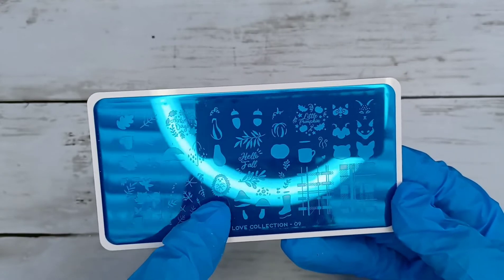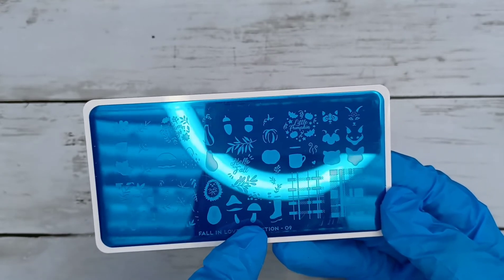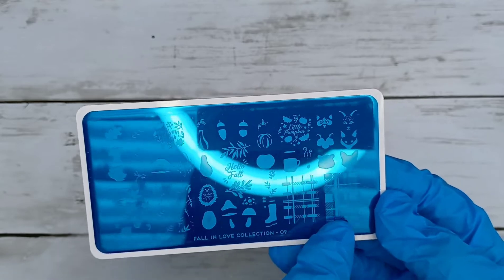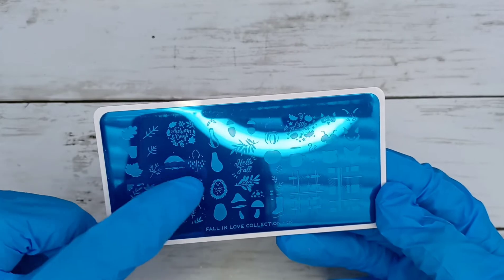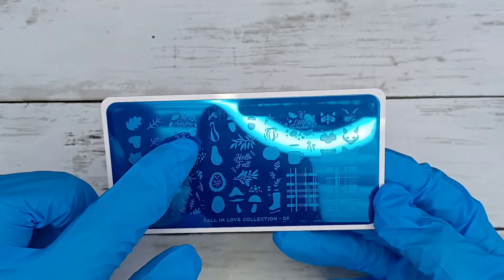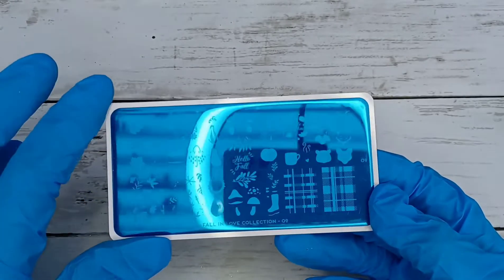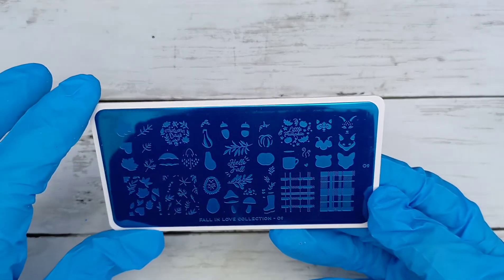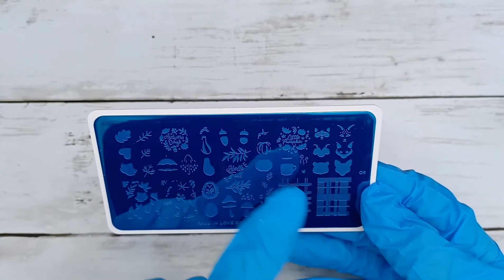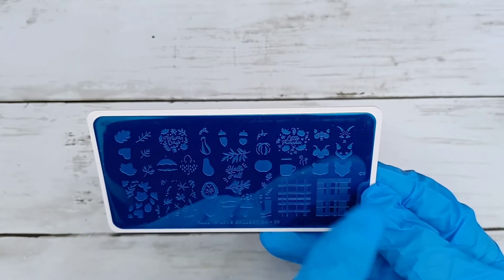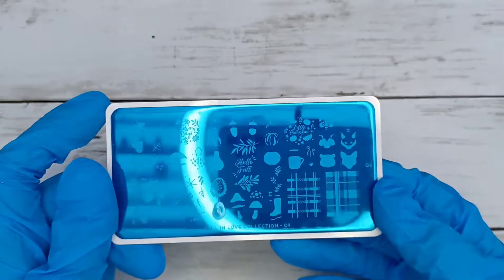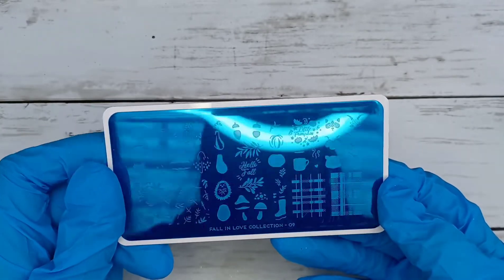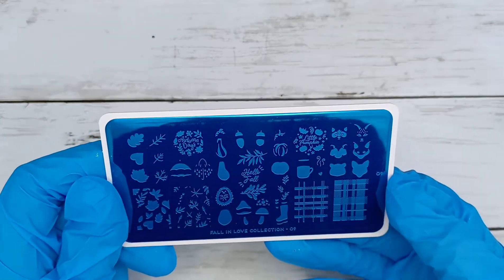Look there's a little hedgehog, toadstools, wellies, plaid or tartan as we call it, leaves, an umbrella, autumn days that's really cute. I'm sorry if I'm holding the stamping plate at a weird angle and you can't see it. A pumpkin, a little pumpkin, a fox, a badger, a cup of coffee. What's not to love there? Like there's so much to love. So that is the first stamping plate that I got.